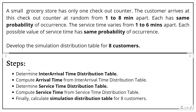The first step is to determine the inter-arrival time distribution table. Inter-arrival time is the difference in arrival times between consecutive customers. For example, if the first customer arrives at 7 o'clock and the second arrives at 8 o'clock, the inter-arrival time is 1 hour. That is what the inter-arrival time distribution table represents.